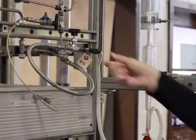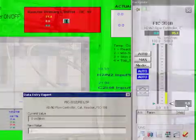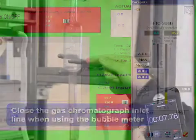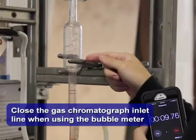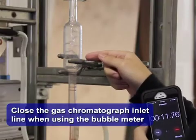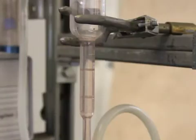Switch the reactant lines to pass through the bubble meter and begin gas flow. Use the bubble meter to set the initial reactant flow rate. Subsequent flow rate adjustments do not need to be measured through the bubble meter.